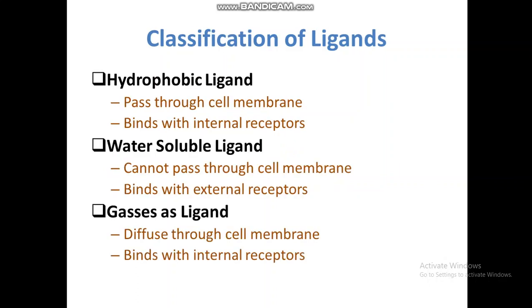Classification of ligands: ligands may be classified as hydrophobic ligands, extracellular or hydrophilic ligands which are polar in nature, and gases as ligands. Hydrophobic ligands can pass through the cell membrane and bind with internal receptors. Water-soluble ligands are polar or hydrophilic, so they cannot pass through the cell membrane and therefore bind with external receptors. Some gases also act as ligands, diffusing through the cell membrane and binding with internal receptors.